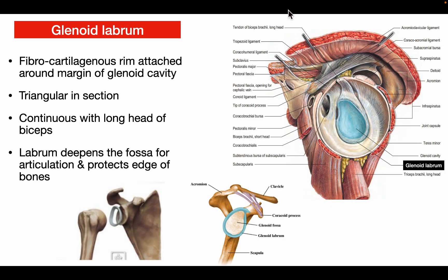The glenoid labrum is a fibrocartilaginous rim attached around the margin of the glenoid cavity, triangular in cross-section. It continues with the long head of the biceps, which originates from the supraglenoid tubercle of the scapula. Its function is to increase the depth of the fossa for articulation of the shoulder joint and to protect the edge of the bones.